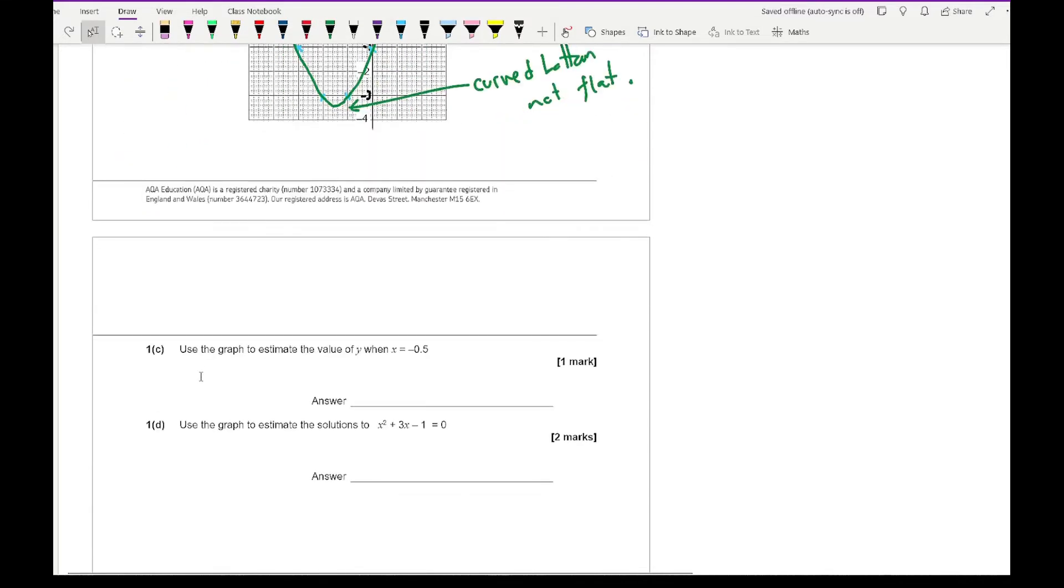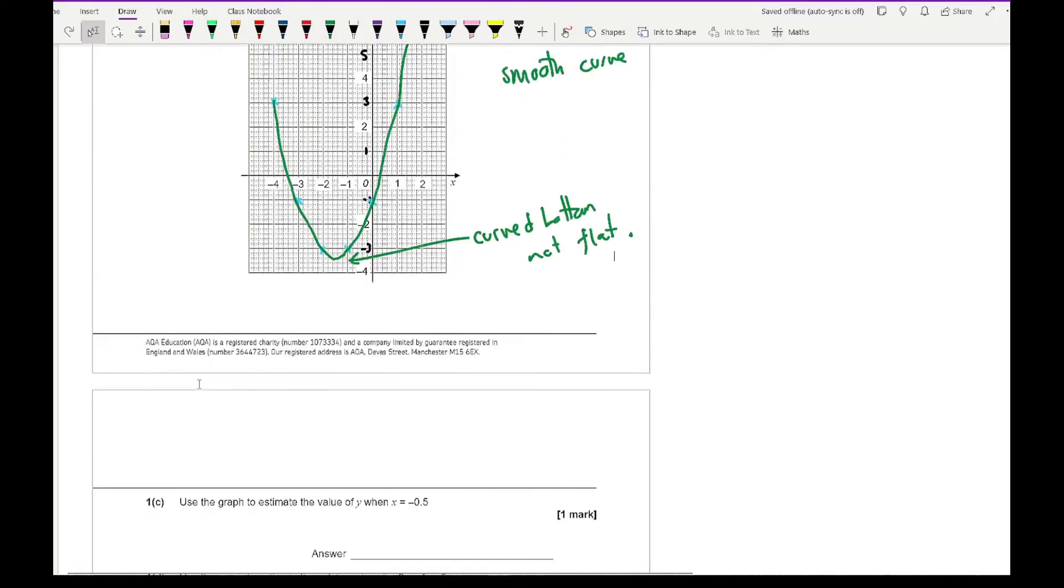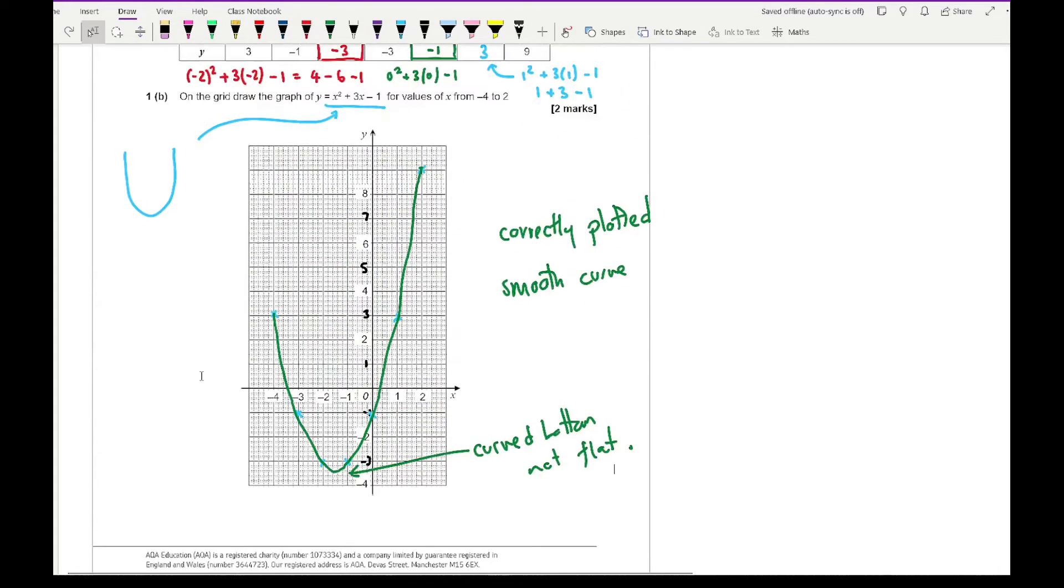Moving on to our next question. It says use the graph to estimate the value of y when x equals minus a half. What you want to do here is draw the line of x equals minus 0.5. Just double check it was minus 0.5. Yes it was. So minus 0.5 is going to be here. What I then want to do is to draw a straight line, preferably with a ruler, but I'm going to be doing this on the computer so it's going to be a little bit more stringent. So that line there is x equals minus 0.5.